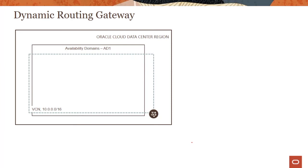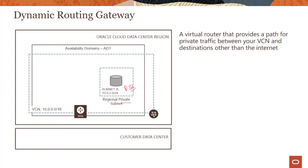The last design pattern covers use cases where you have a private subnet — perhaps a database — and instead of going to the internet you need to reach your own customer data centers on-premises. For example, your DNS is running on-prem and your cloud database needs to access it, or you want to migrate data from on-prem environments. For these use cases there is a managed service called Dynamic Routing Gateway — a virtual router that provides a path for private traffic between the VCN and destinations other than the internet.